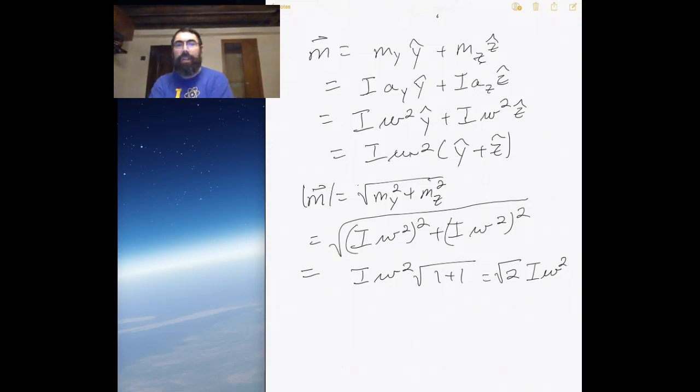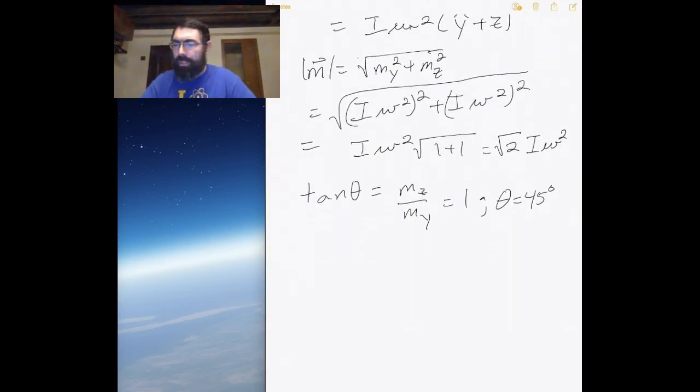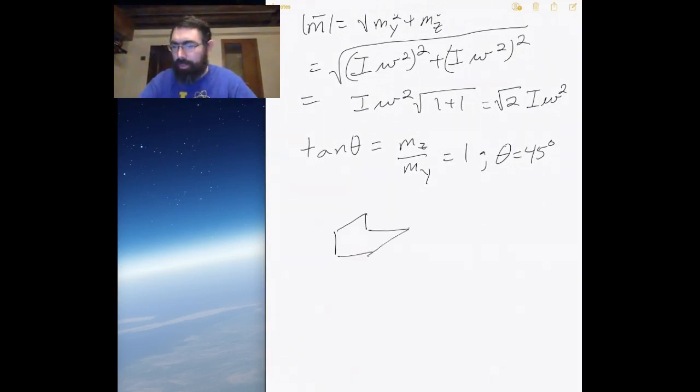Now what about the direction? The direction of it - what I could look at is the tangent of some angle is going to be equal to the z direction divided by the y direction, so that's one. So my angle therefore is 45 degrees or pi over 4.